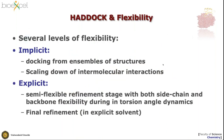In terms of flexibility, we account for several levels. We have an implicit way of representing flexibility by docking from ensembles of structures. You should not use too many of those, otherwise the number of combinations will explode and you have a dilution problem — if only one starting conformation combination leads to good results, the chance of getting those results becomes smaller as you increase combinations. We do one docking run starting from multiple combinations rather than repeating for each.